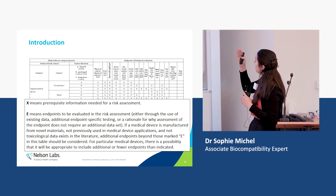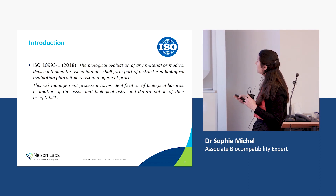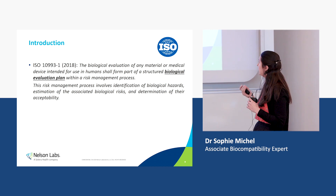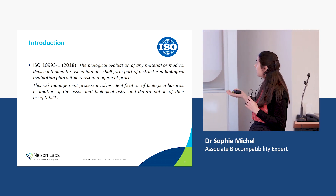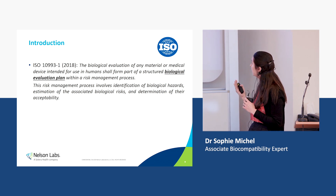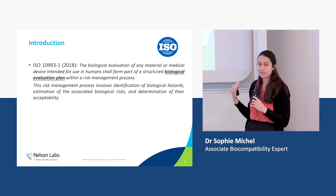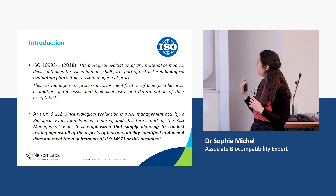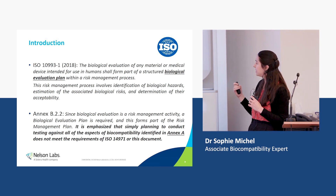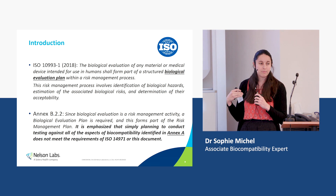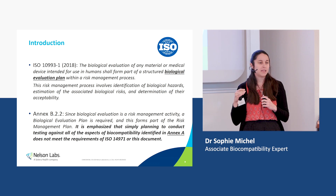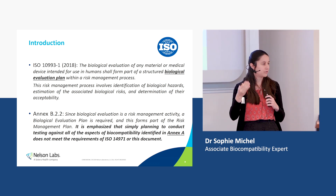So what is a biological evaluation plan in this framework? This is defined by ISO 10993-1. The risk management process or BEP involves identification of biological hazards, estimation of the associated biological risk, and determination of their acceptability. Annex B.2.2.2 also says that simply planning to conduct testing against all aspects of biocompatibility identified in Annex A does not meet the requirements of ISO 14971 or this document — so you cannot use the checkbox approach like we used to do in the past.